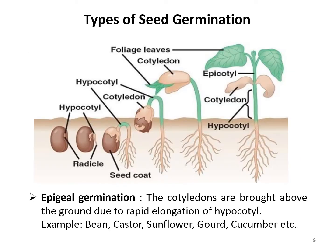There are two main types of germination: epigeal and hypogeal germination. In epigeal germination — 'epi' meaning above and 'geo' meaning earth — the hypocotyl elongates and forms a hook, pulling the cotyledon above the ground. Epigeal germination is seen in many dicot seeds such as beans, castor, sunflower, cucumber, etc.